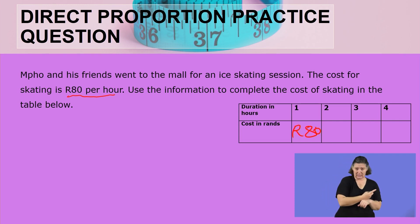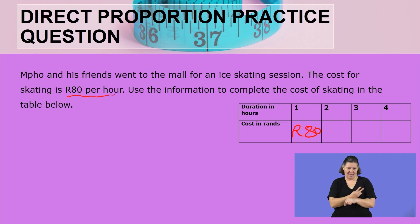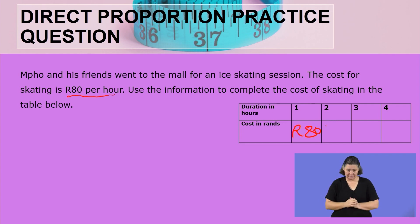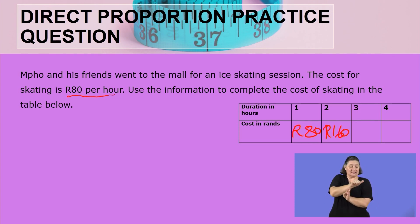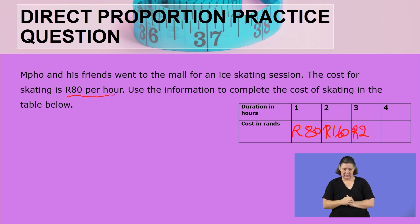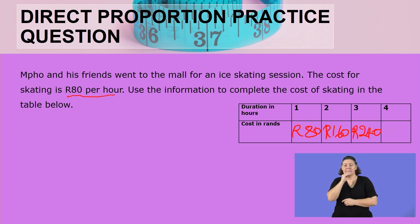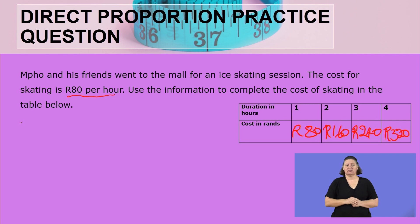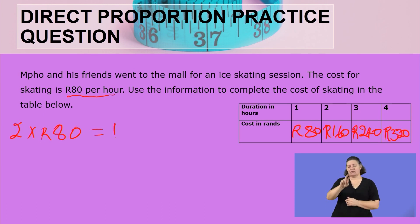For two hours, press the calculator with me. We say 80 rand plus 80 rand because it is two hours — 80 plus 80 equals 160 rand. For the third hour, we always add 80 to the previous one, so 160 plus 80 rand gives us 240. And then for the next one, 240 plus 80 rand gives us 320. For those who prefer to multiply: for two hours, 2 by 80 rand gives you exactly the same answer, 160.